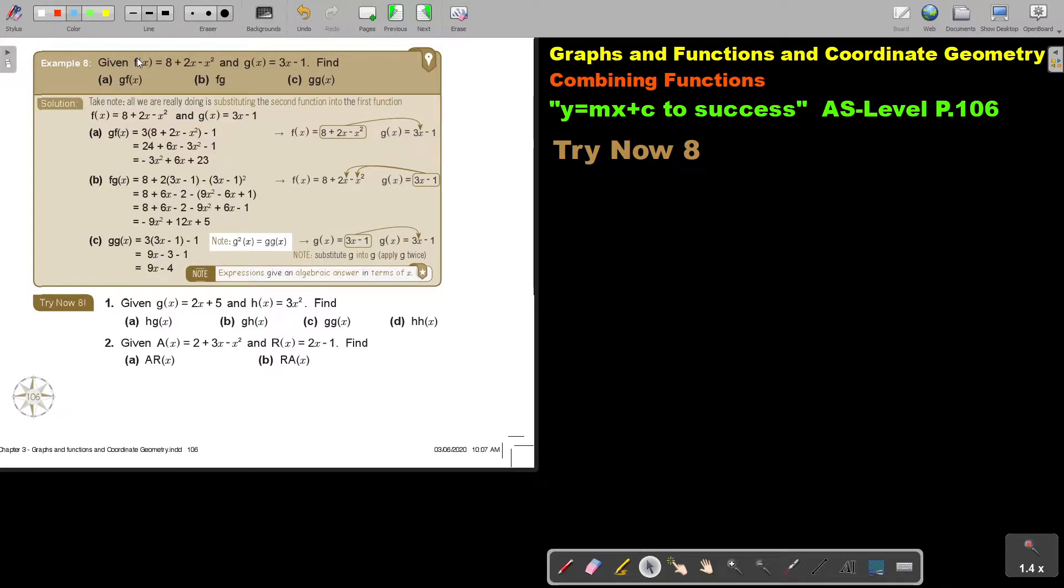Let's look at another example. Given f of x is equal to this and g of x is equal to this, find gf, and now it's not a number, it's a variable, fg. If it's nothing, it's actually meaning there's an x, and gg x. So let's start. Take note, all we are really doing is substituting the second function into the first function.